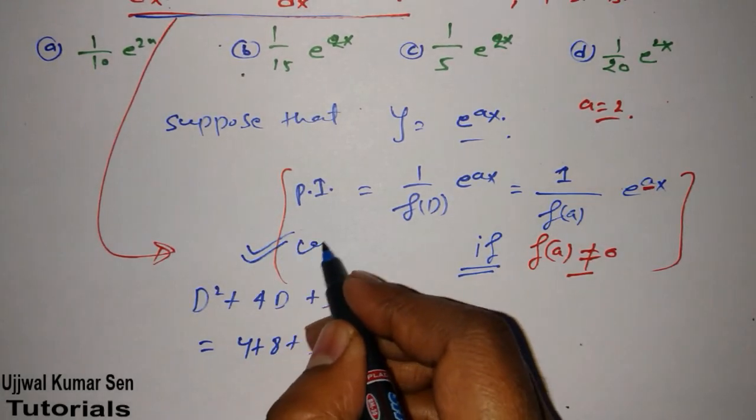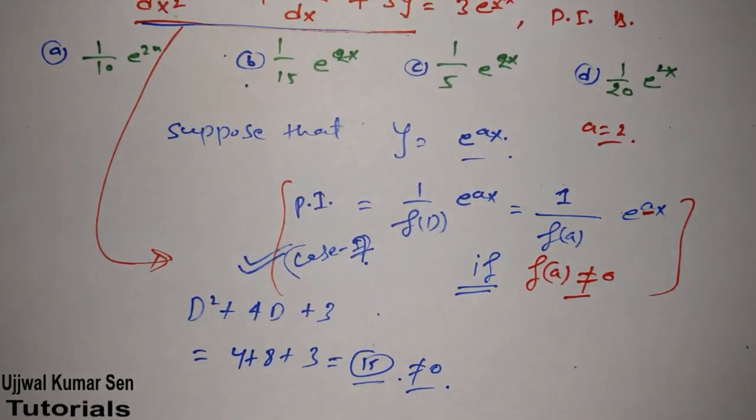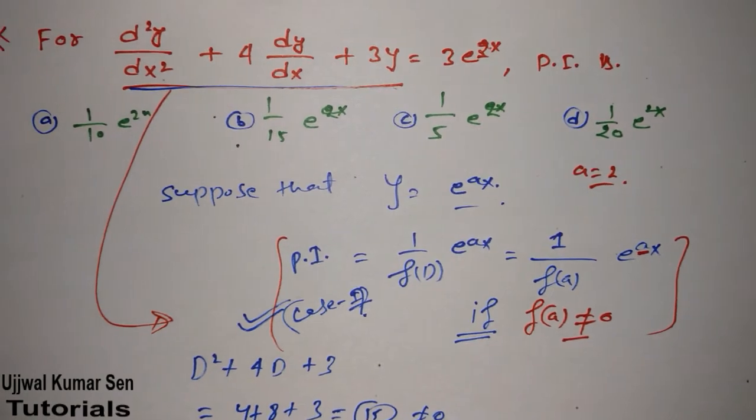That means it's not 0, right? 15 is not 0, so it's not equal to 0. That means we can follow this case in this question.